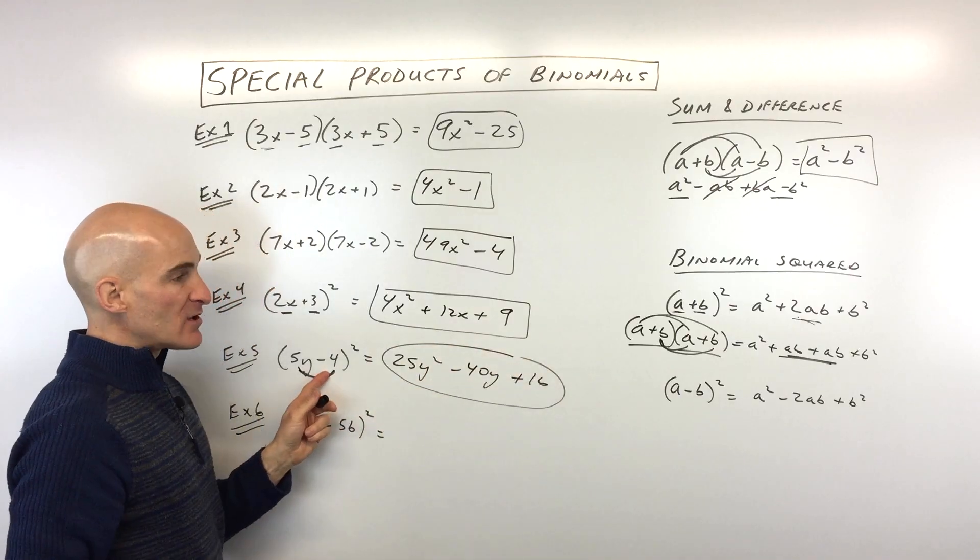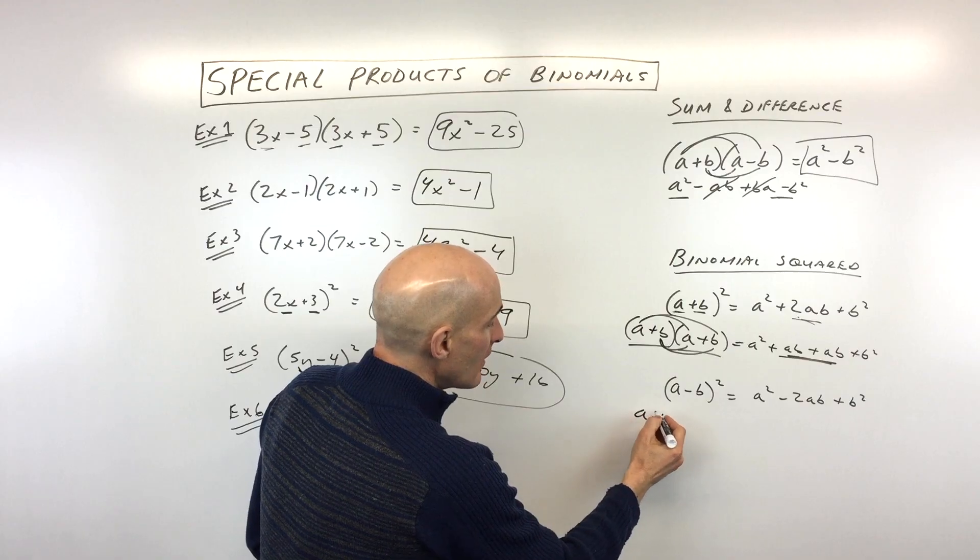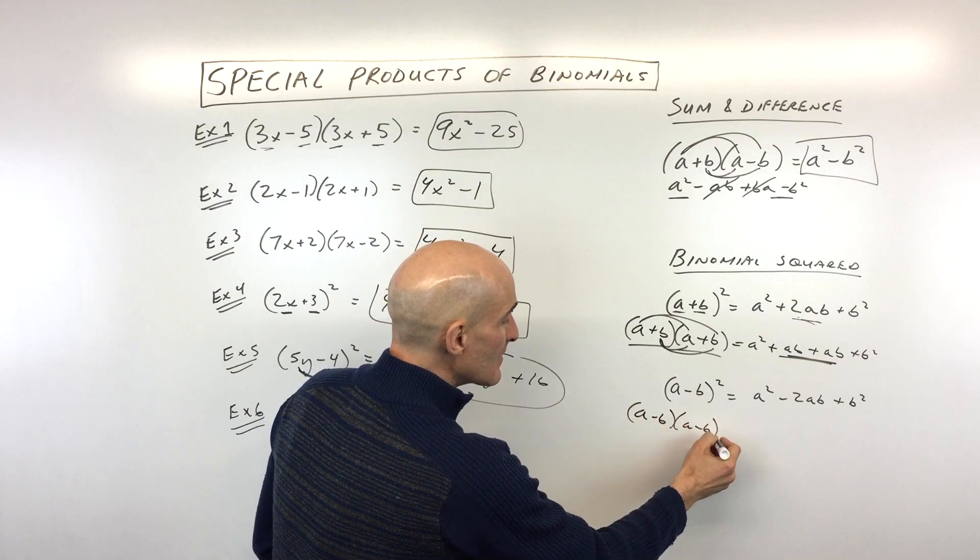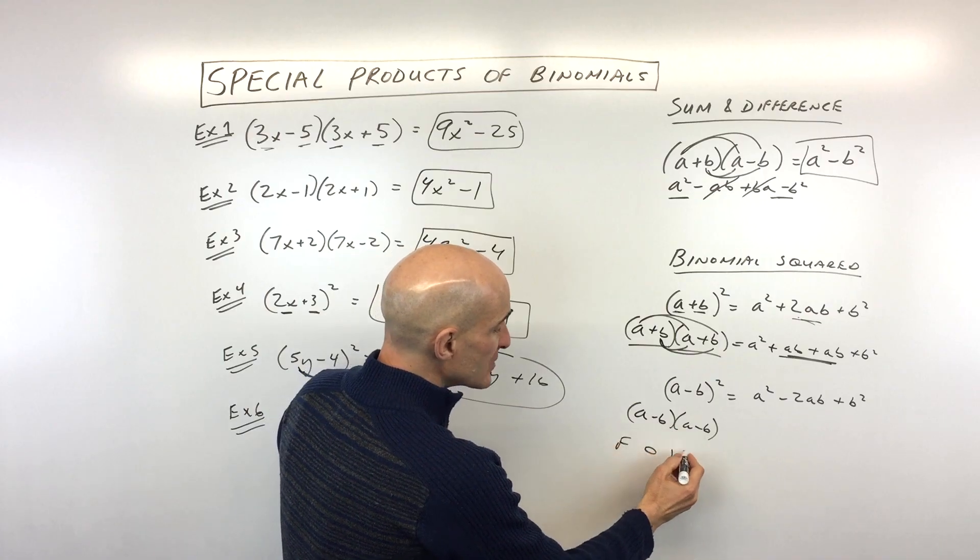Now, you're probably wondering, okay, why are we doubling it. Well, let's just look over here again. So see the a minus b squared? That just means a minus b times another a minus b. And if you learn the FOIL method, the first, outer, inner, last,